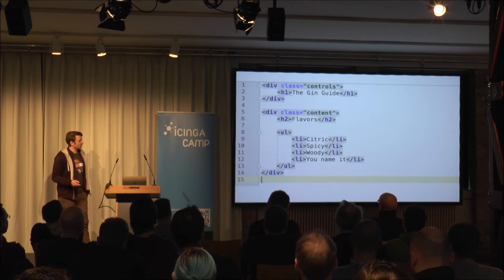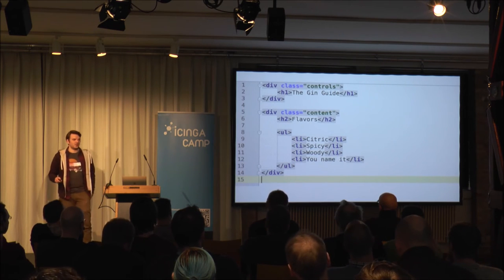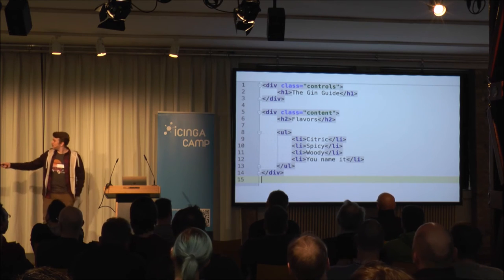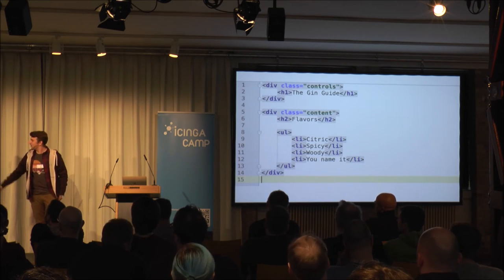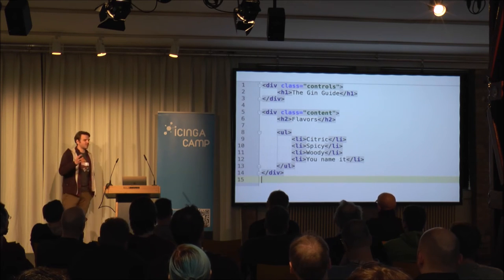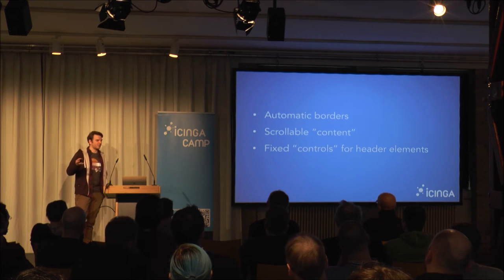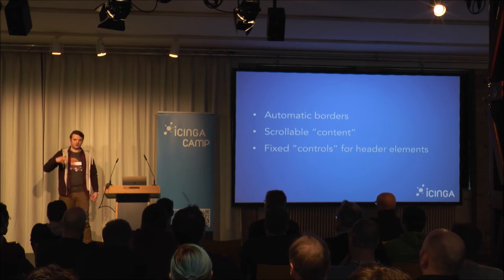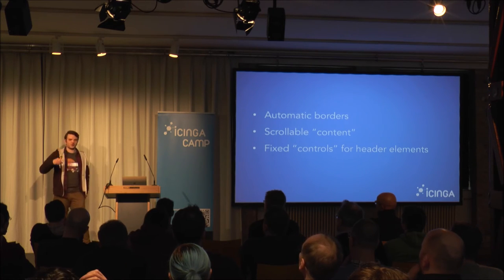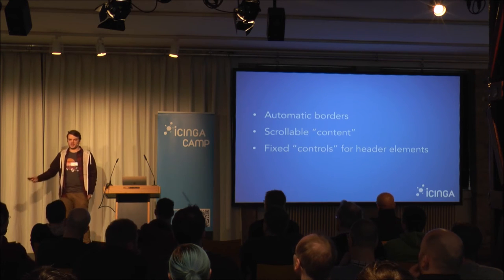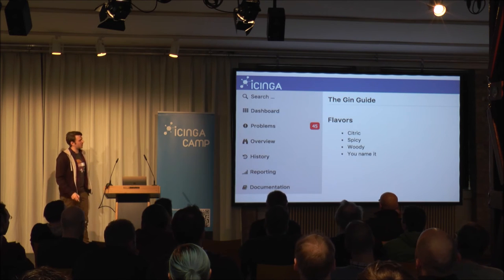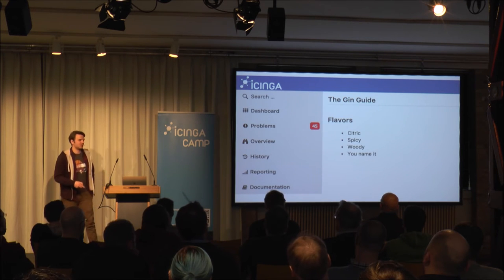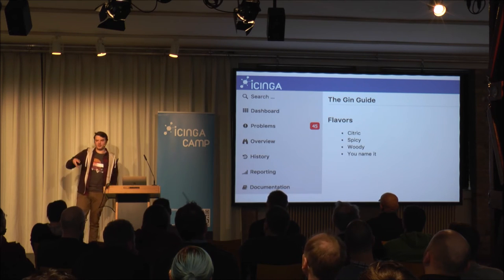This is what a view script looks like. We have two CSS classes you should always use: 'controls' where we put a header for example, and 'content' where we display gin flavors. This gives us automatic borders with controls and content, scrollable content, and fixed controls — meaning when content grows bigger, users can only scroll the content, but things in controls are sticky. Our heading is displayed and we have some gin flavors listed.